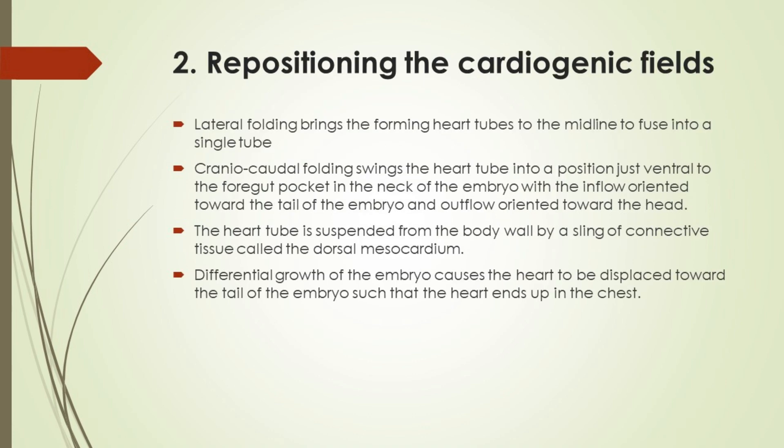Repositioning the cardiogenic fields: Lateral folding brings the forming heart tubes to the midline to fuse into a single tube. Cranio-caudal folding swings the heart tube into a position just ventral to the foregut pocket in the neck of the embryo, with the inflow oriented toward the tail and the outflow oriented toward the head. The heart tube is suspended from the body wall by a sling of connective tissue called the dorsal mesocardium. Differential growth of the embryo causes the heart to be displaced toward the tail such that the heart ends up in the chest.